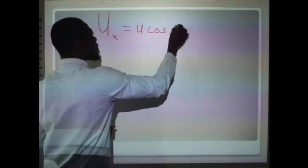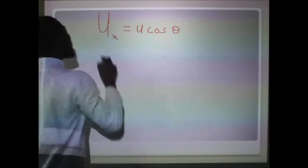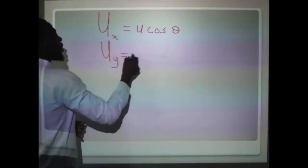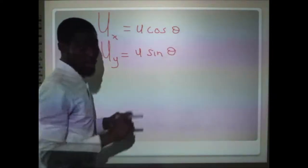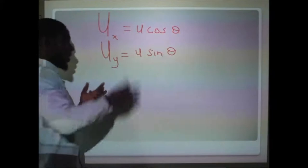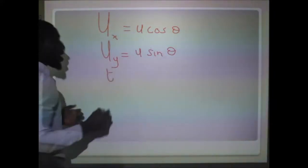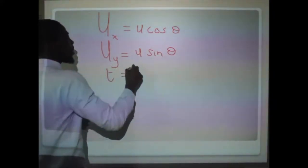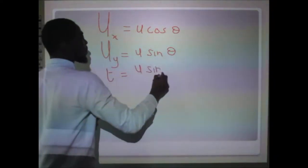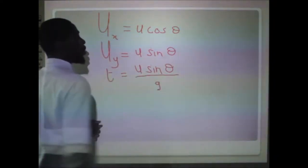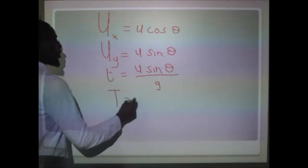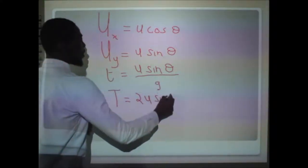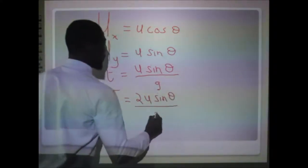The horizontal velocity u_x is expressed as u·cos(θ). The vertical velocity u_y is expressed as u·sin(θ). The time taken to reach maximum height is u·sin(θ) / g. The time of flight is twice the time to reach maximum height: 2u·sin(θ) / g.